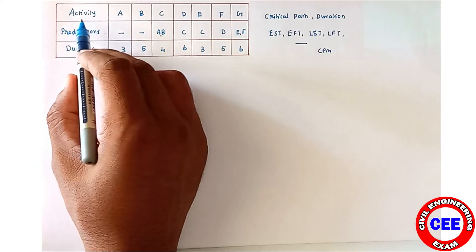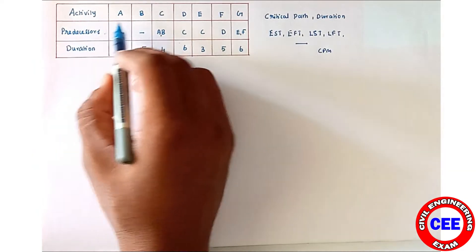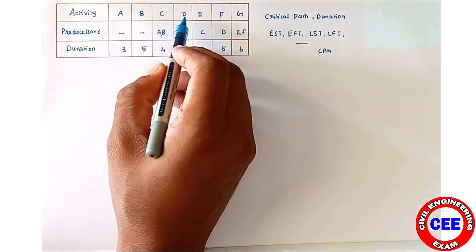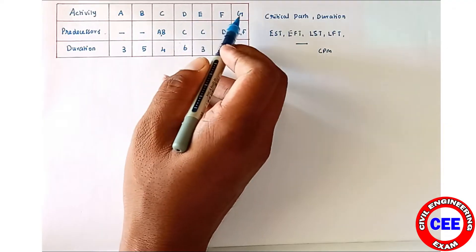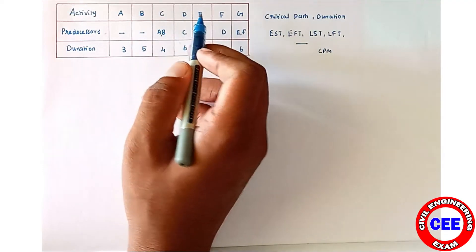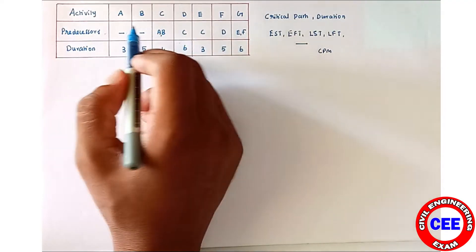The given activities are A, B, C, D, E, F, and G. So there are seven activities given.